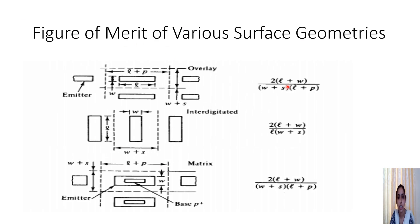This slide shows a figure of merit expression for each surface geometry. Each geometry's unit cell yields a different figure of merit equation. Here L represents the length of the electrode, W the width of the electrode, S the spacing or separation between electrodes, and P the pitch or center-to-center distance between electrodes. The expression differs for overlay, interdigitated, and matrix geometries.